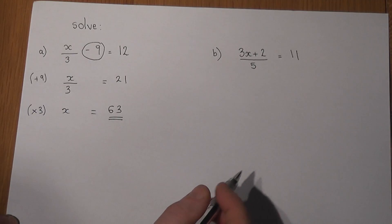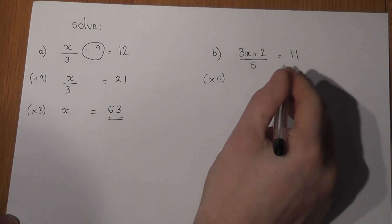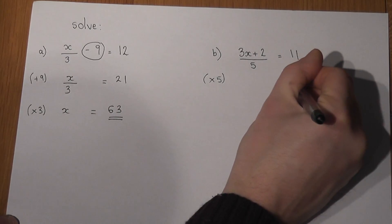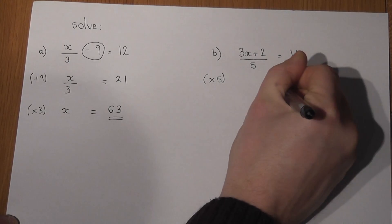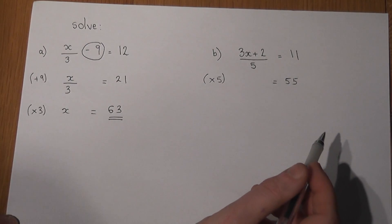Now 5 times 11 we know to be 55, and if we times by 5 the over 5 just cancels off, and all we're left with on the left hand side is 3x plus 2.